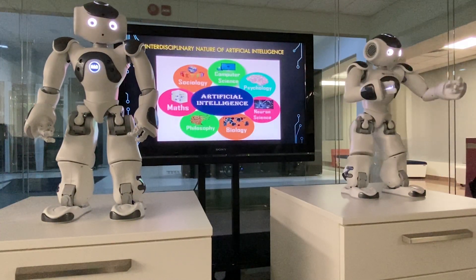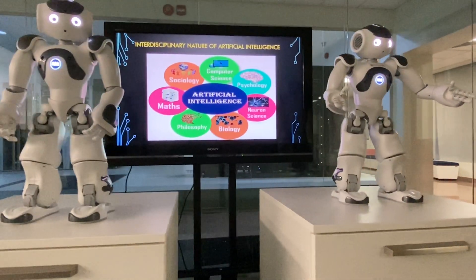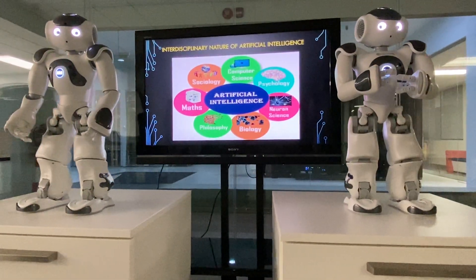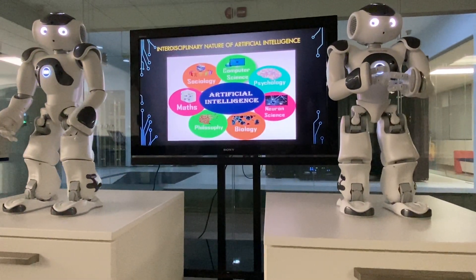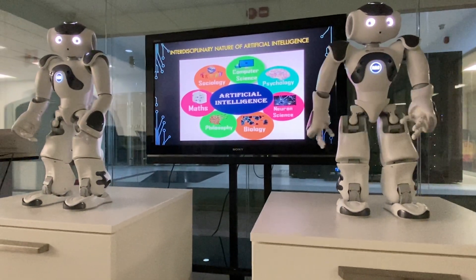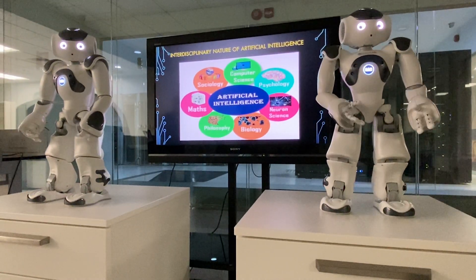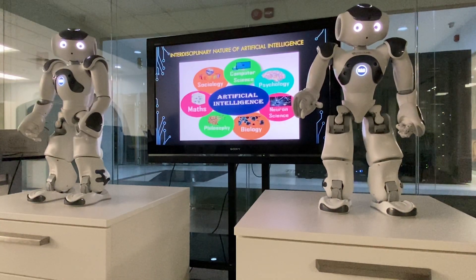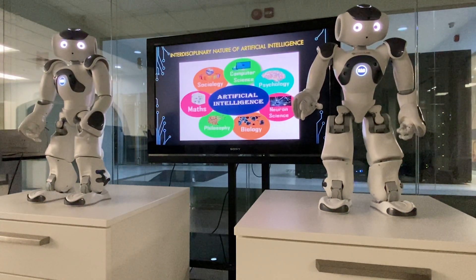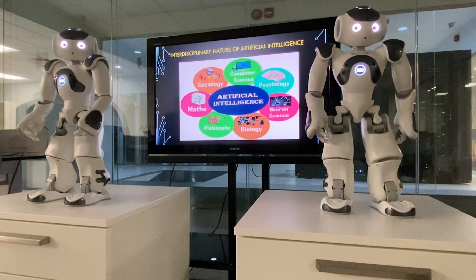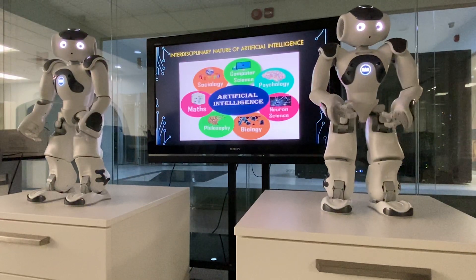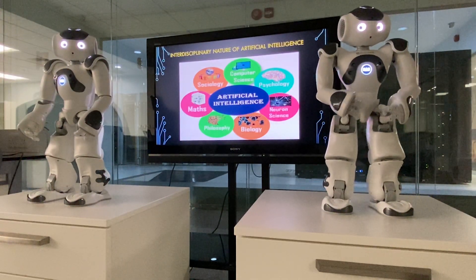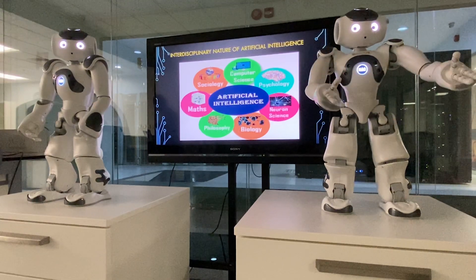High accuracy with less errors: AI machines or systems are prone to fewer errors and high accuracy as they take decisions based on pre-experience or information. High speed: AI systems can operate at very high speed and fast decision making — because of that, AI systems can beat a chess champion in a chess game.